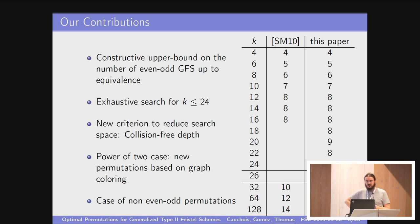So what are our contributions? We give an upper bound, and more than that a constructive upper bound, on how many even-odd GFS we have up to some notion of equivalence. Using this constructive method, we can do the exhaustive search for up to 24 blocks. When exhaustive search is out of reach, we define a new criterion to reduce the search space, which we call collision-free depth. In a few words, it means we want to have a special criterion for the first few rounds of diffusion.